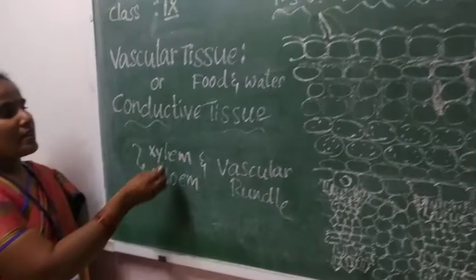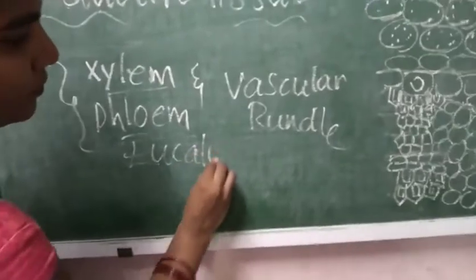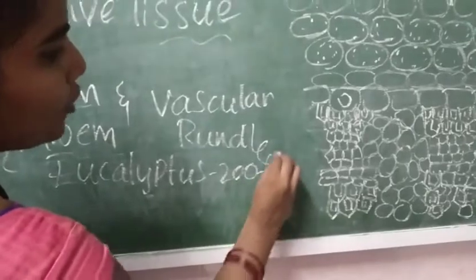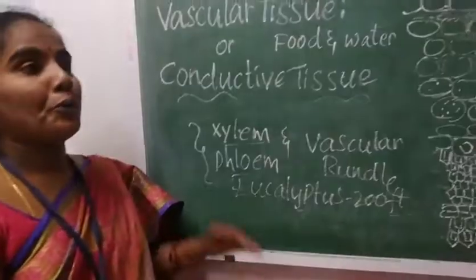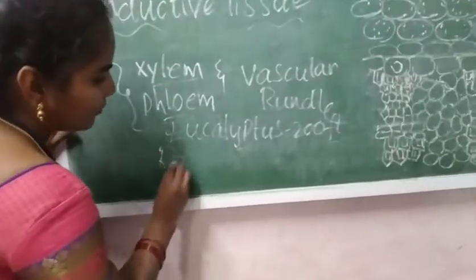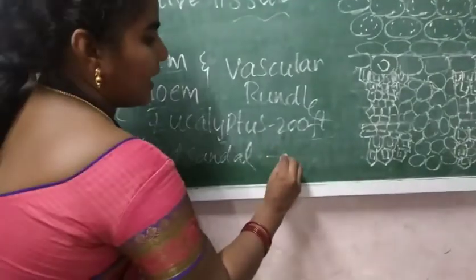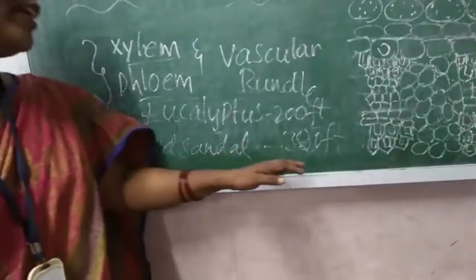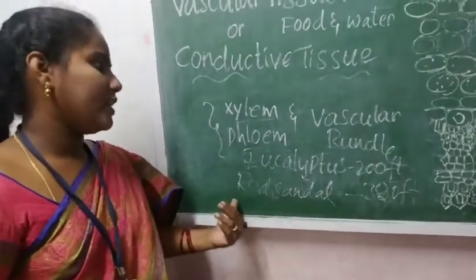Taking the example of the eucalyptus tree: its height is about 200 feet, and the xylem has the capacity to transport water to that height. For the redwood trees, the xylem helps transport water up to 340 feet. This is the remarkable specialty of the xylem.